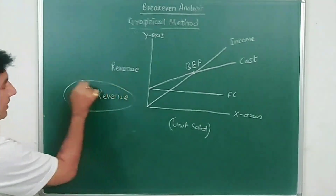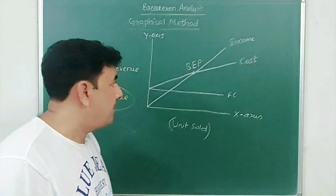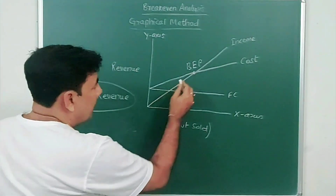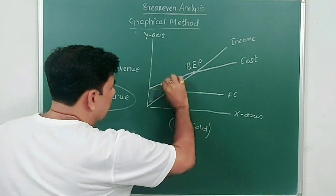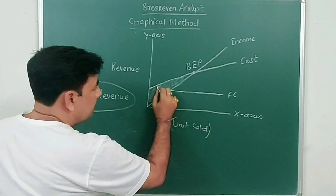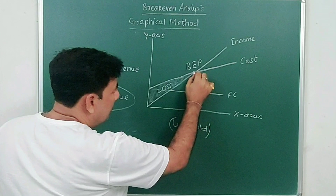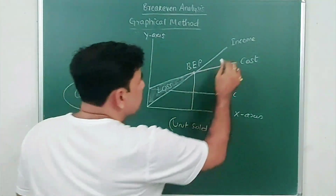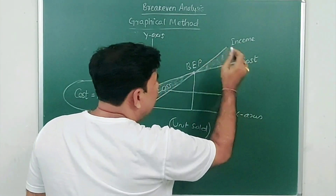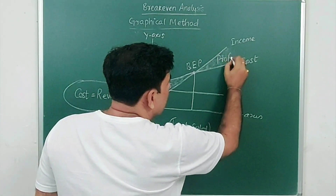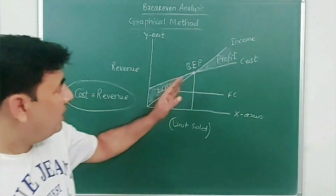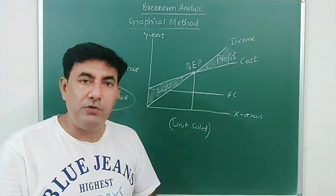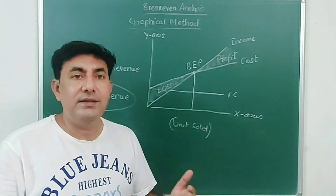This is what we generally find using break-even analysis. One more thing you can mention in your answer: the left-hand side of the break-even point is the loss area, and the right-hand side area is the profit area. So it is very simple.